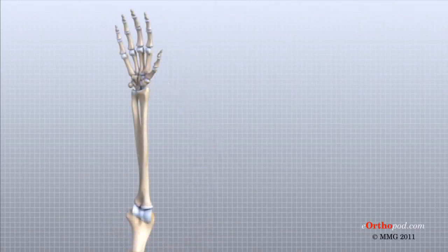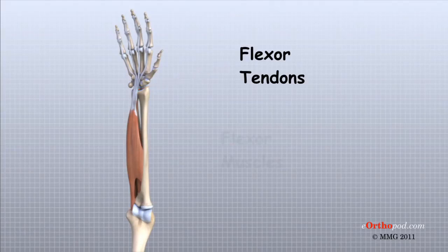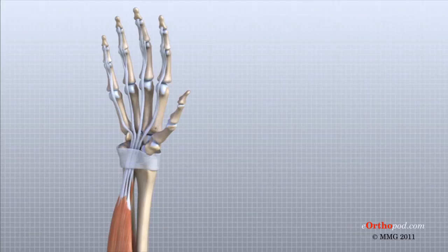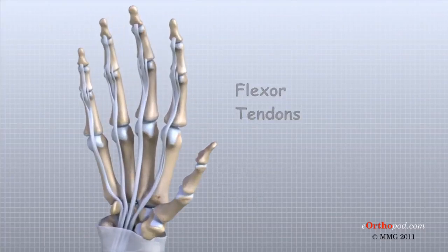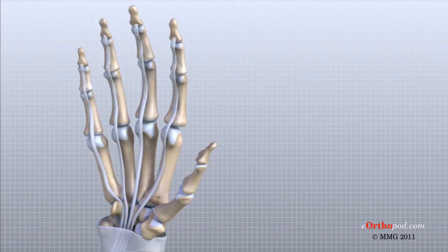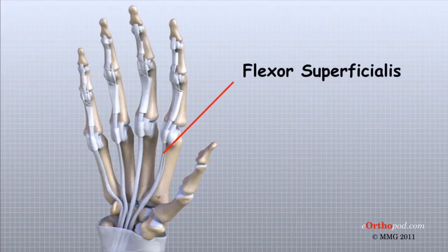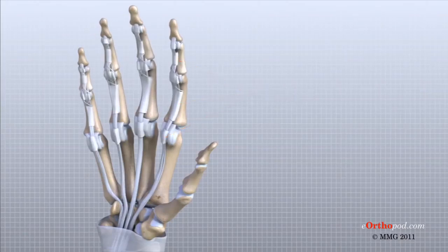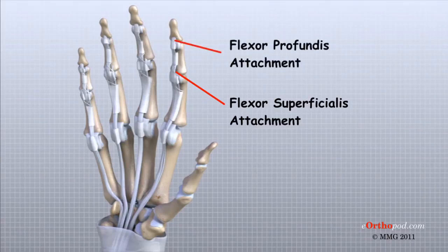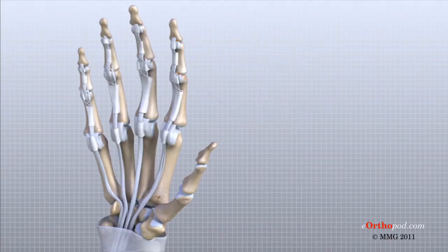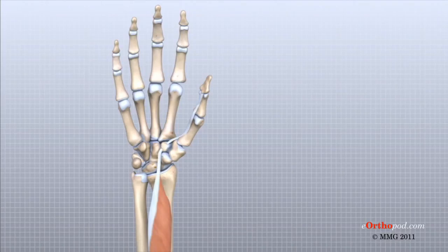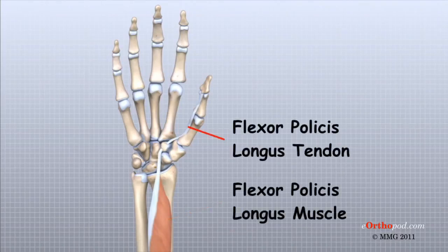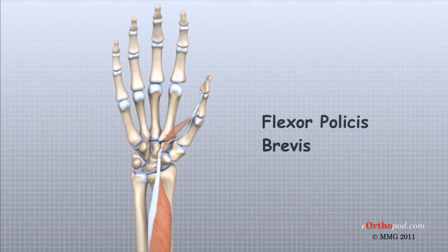The flexor tendons allow the fingers and thumb to flex or bend to grip objects in the palm of the hand. The strong flexor muscles begin in the forearm, and just before they enter the wrist, the flexor muscles form the flexor tendons. The flexor tendons travel through the carpal tunnel, through the palm, and two tendons each travel into the palmar side of each finger. These two tendons — the flexor superficialis and flexor profundus — travel through a special tunnel formed by a series of specialized ligaments that form pulleys. The flexor superficialis connects to the base of the middle phalanx, and the flexor profundus tendon connects to the base of the distal phalanx. The thumb is a bit different since it only has two phalanges. The flexor pollicis longus begins in the forearm and its tendon connects to the base of the distal phalanx of the thumb. The flexor pollicis brevis muscle begins in the wrist, and its tendon connects to the base of the proximal phalanx of the thumb.